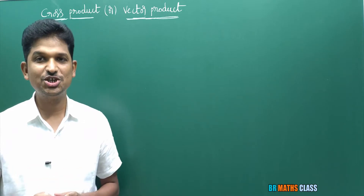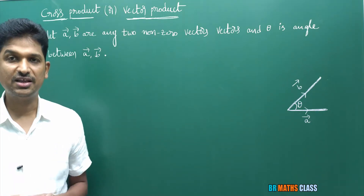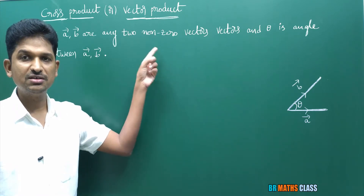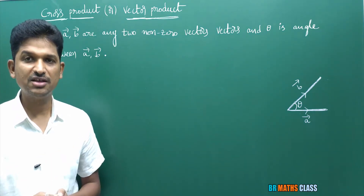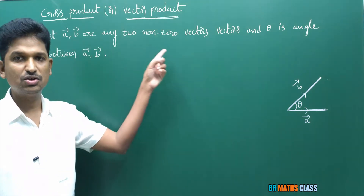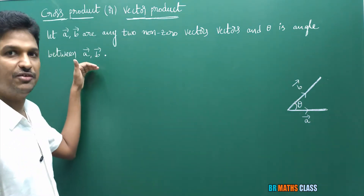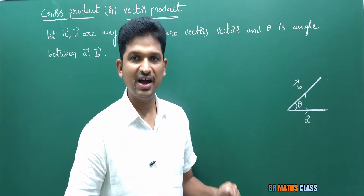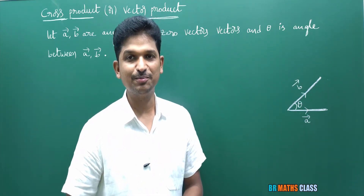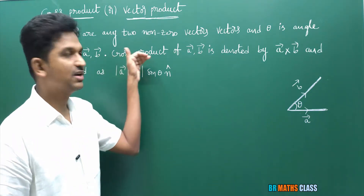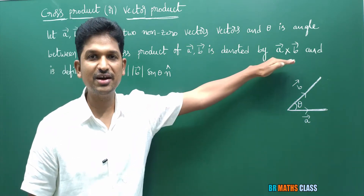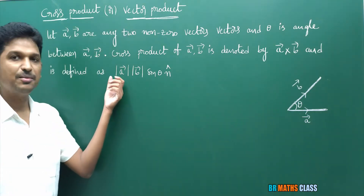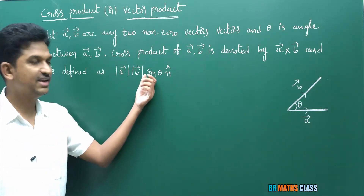First, we will learn the definition of cross product. Let a̅, b̅ be any two non-zero vectors. Why non-zero vectors? Because the angle between zero vectors is not defined. And theta is the angle between the vectors a̅ and b̅. Cross product of vectors a̅ and b̅ is denoted by a̅ cross b̅.